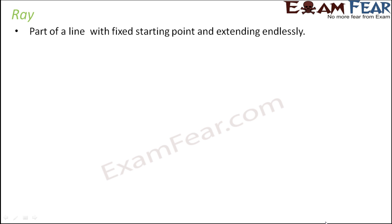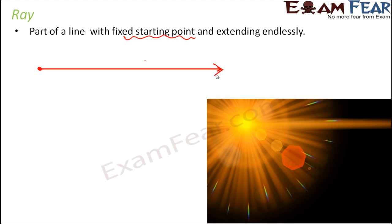Next is ray. It is a part of a line with a fixed starting point and extending endlessly. Ray is also a part of a line just like line segment, but in this case it has only one fixed starting point and it extends endlessly on the other side - only one fixed point. Ray is like an intermediate between line and line segment. Line extends in both directions, line segment has both fixed points, ray has one fixed point and one side extending infinitely.